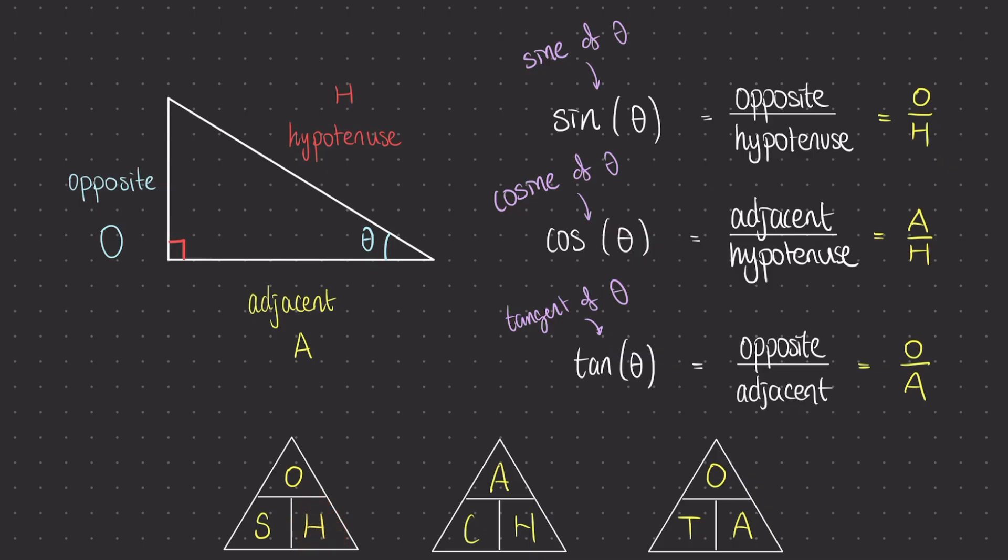And now if we read out these triangles, we find that it spells SOH-CAH-TOA, which is a nice little mnemonic, very easy to remember, SOH-CAH-TOA, and you'll get those three formulas memorized.